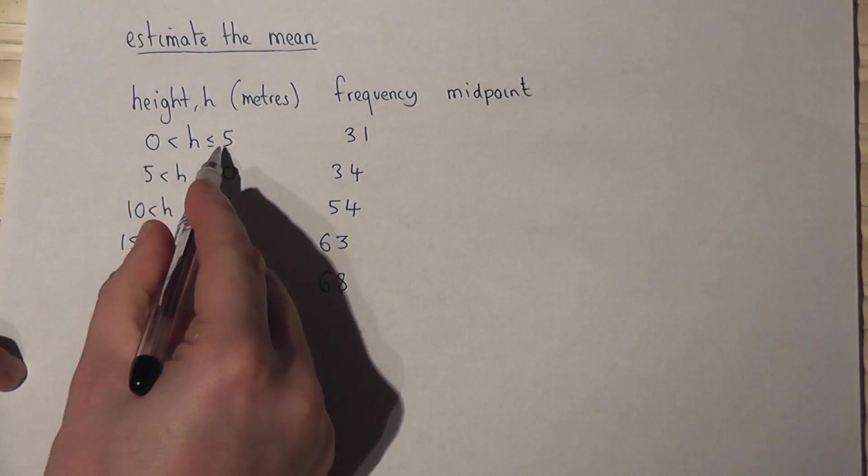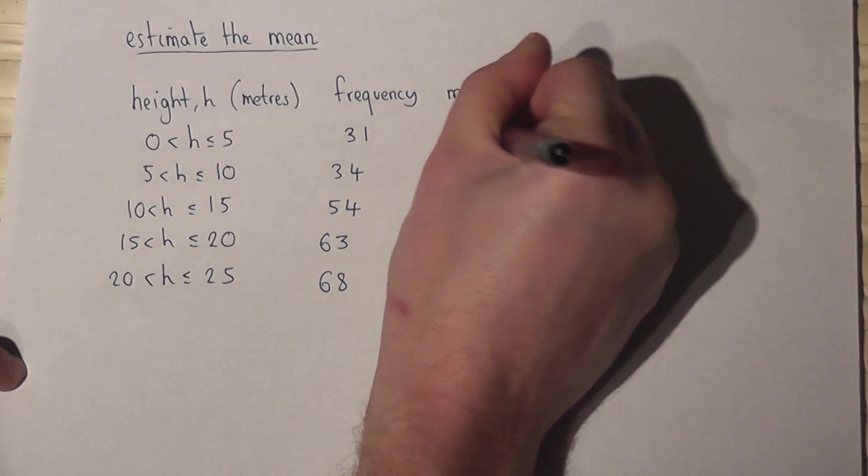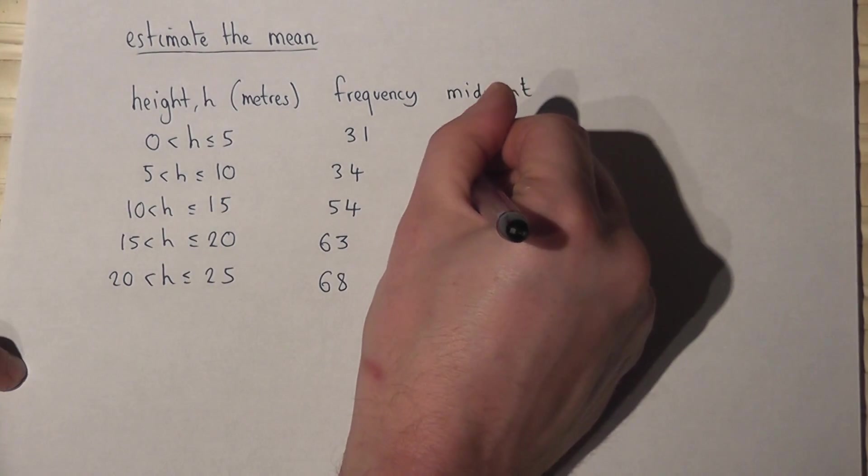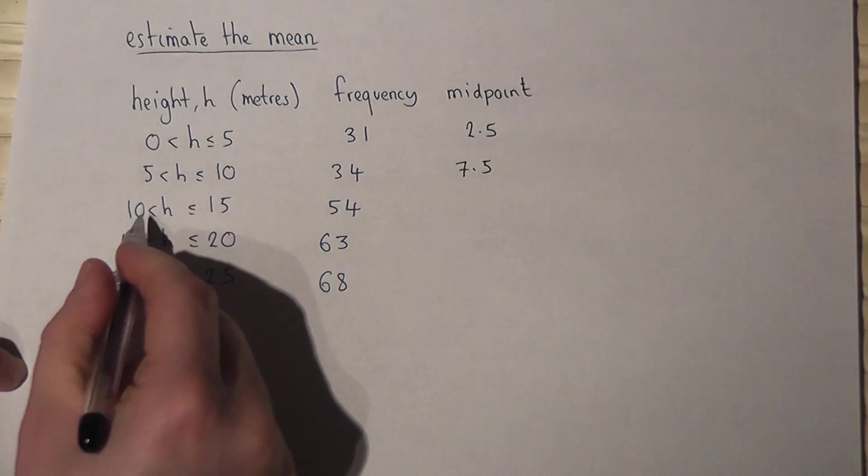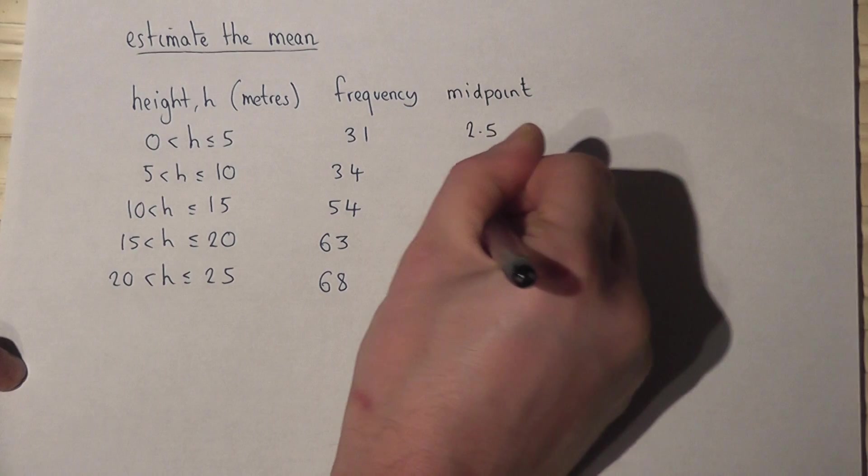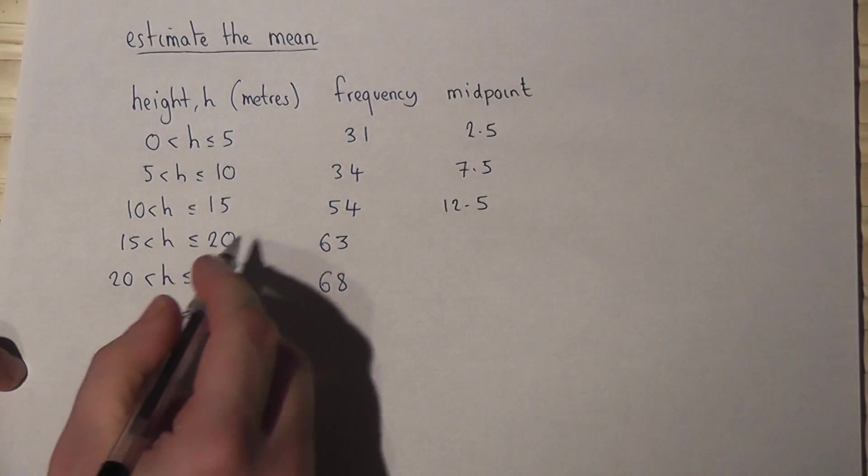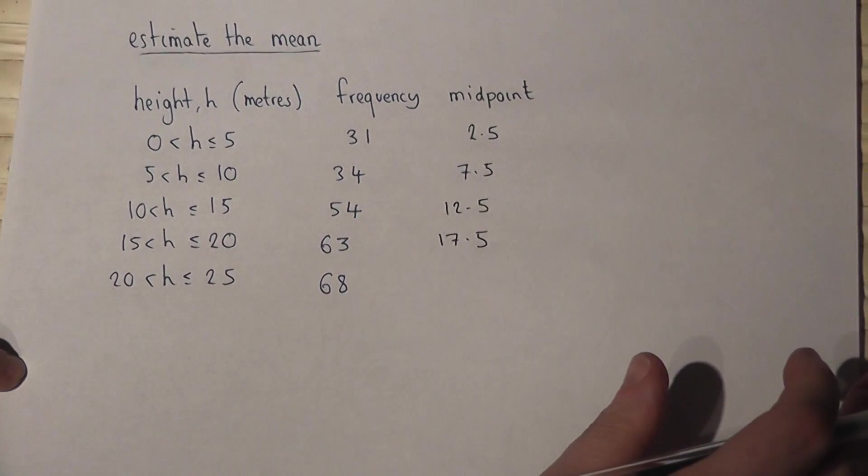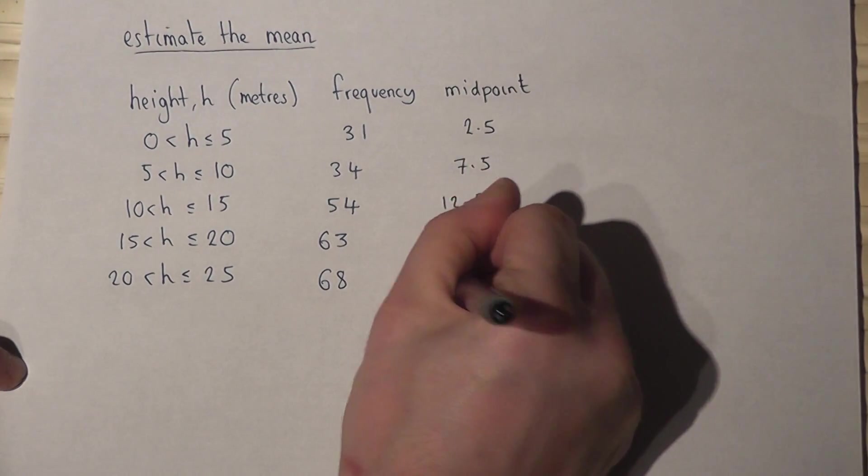Between 0 and 5 I'll call that 2.5 metres. This is why it's an estimate. Between 5 and 10, 7.5 metres. 10 to 15 will be 12.5 metres. 15 to 20 will be 17.5, and 20 to 25 will be 22.5.